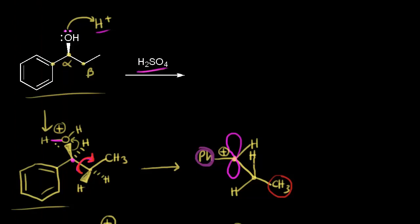The p orbital of the carbocation aligns parallel with the breaking carbon-hydrogen bond, so electron density from this bond can be donated into the p orbital. In the E1 mechanism, a weak base comes along and takes that proton; those electrons in light blue move in to form our double bond. This conformation gives us the trans product: phenyl group, double bond, then methyl group (CH3).